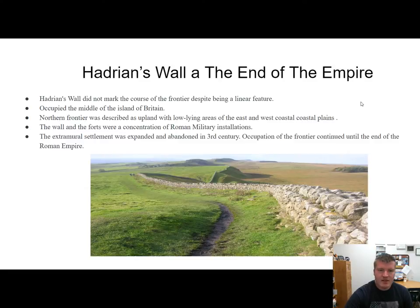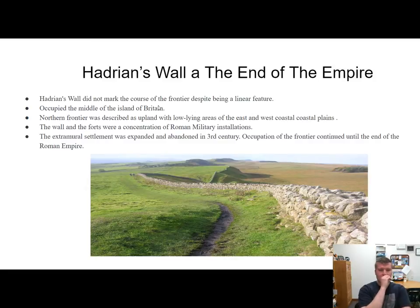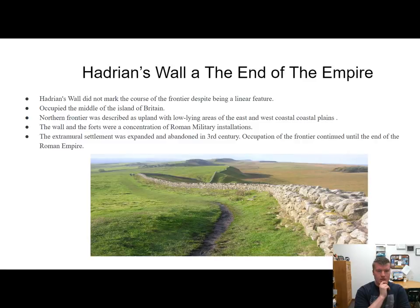And then my last source, it's called Hadrian's Wall at the End of the Empire. Hadrian's Wall didn't necessarily mark the course of the frontier, despite it being a linear feature. It occupied the middle island of Britain, and the northern frontier was described as upland, low-lying areas of east and west coastal plains. The wall and the forts were a concentration of Roman military installations. The extramural settlement was expanded and abandoned in the third century, and occupation of the frontier continued until the end of the Roman Empire.